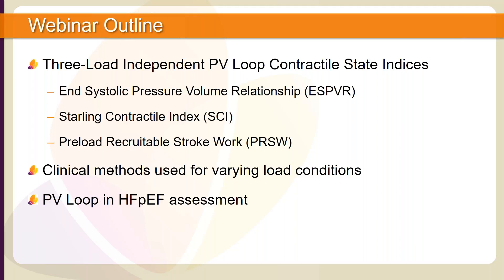We received feedback during our last PV loop webinar requesting a review of the three load independent PV loop contractile state indices. Today's webinar will take a deeper dive discussing the End-Systolic Pressure Volume Relationship (ESPVR), the Starling Contractile Index, and the preload recruitable stroke work. There are several reported methods for calculating the ESPVR line — we will discuss three methods today. To support the discussion of calculating ESPVR from load changes, we will discuss several clinical methods to vary load conditions. The webinar will then conclude with a review of a clinical publication highlighting the value of PV loops and HFpEF evaluation.